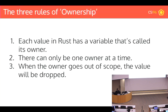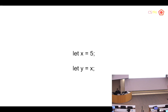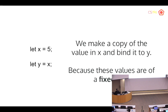Here, X is the owner of 5. In a traditional language, assigning Y = X would make Y equal to 5. In Rust this also holds, because integers of 32 bits are of a fixed, known size. So Rust will make a copy of 5 and assign it to Y.